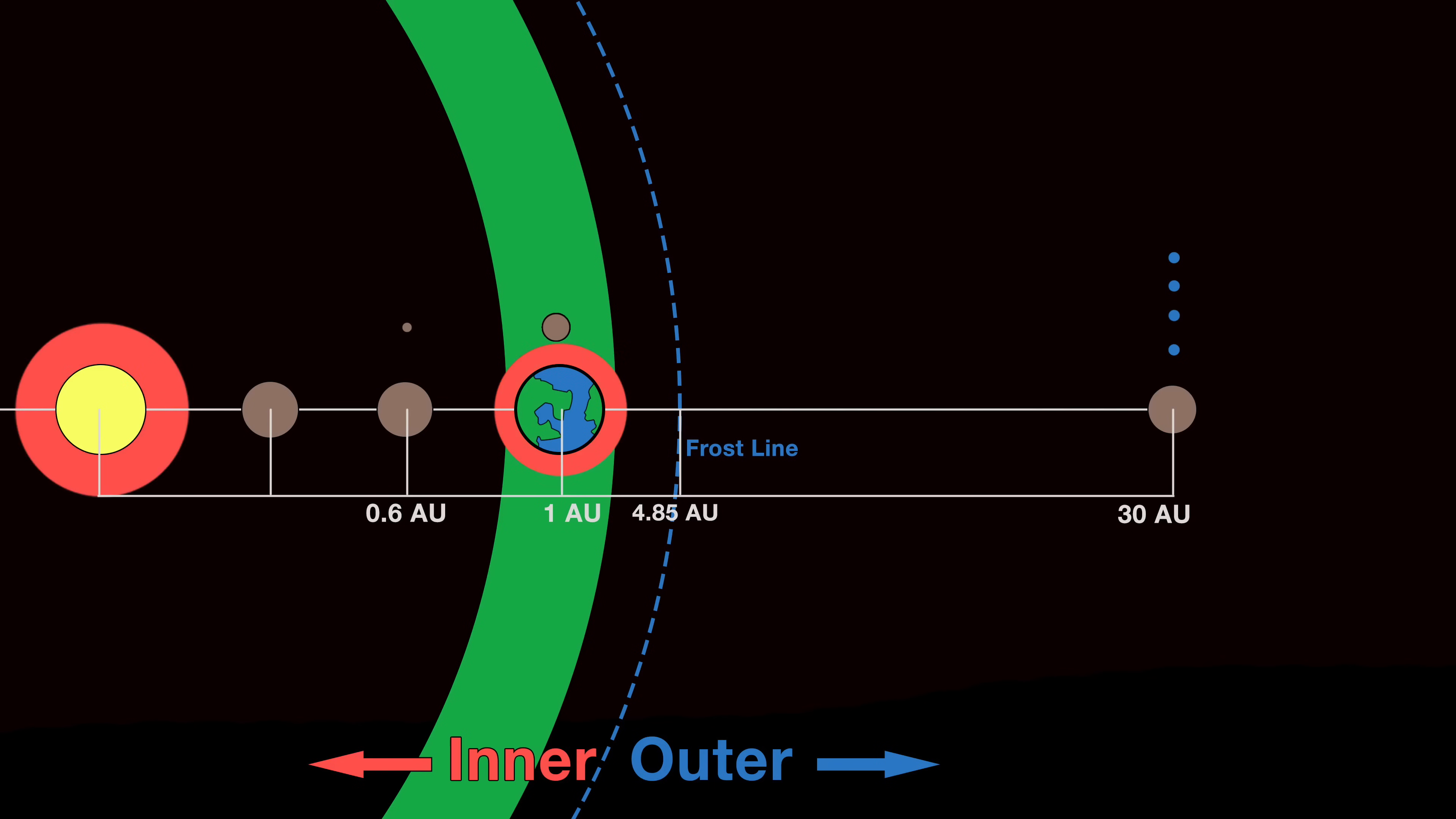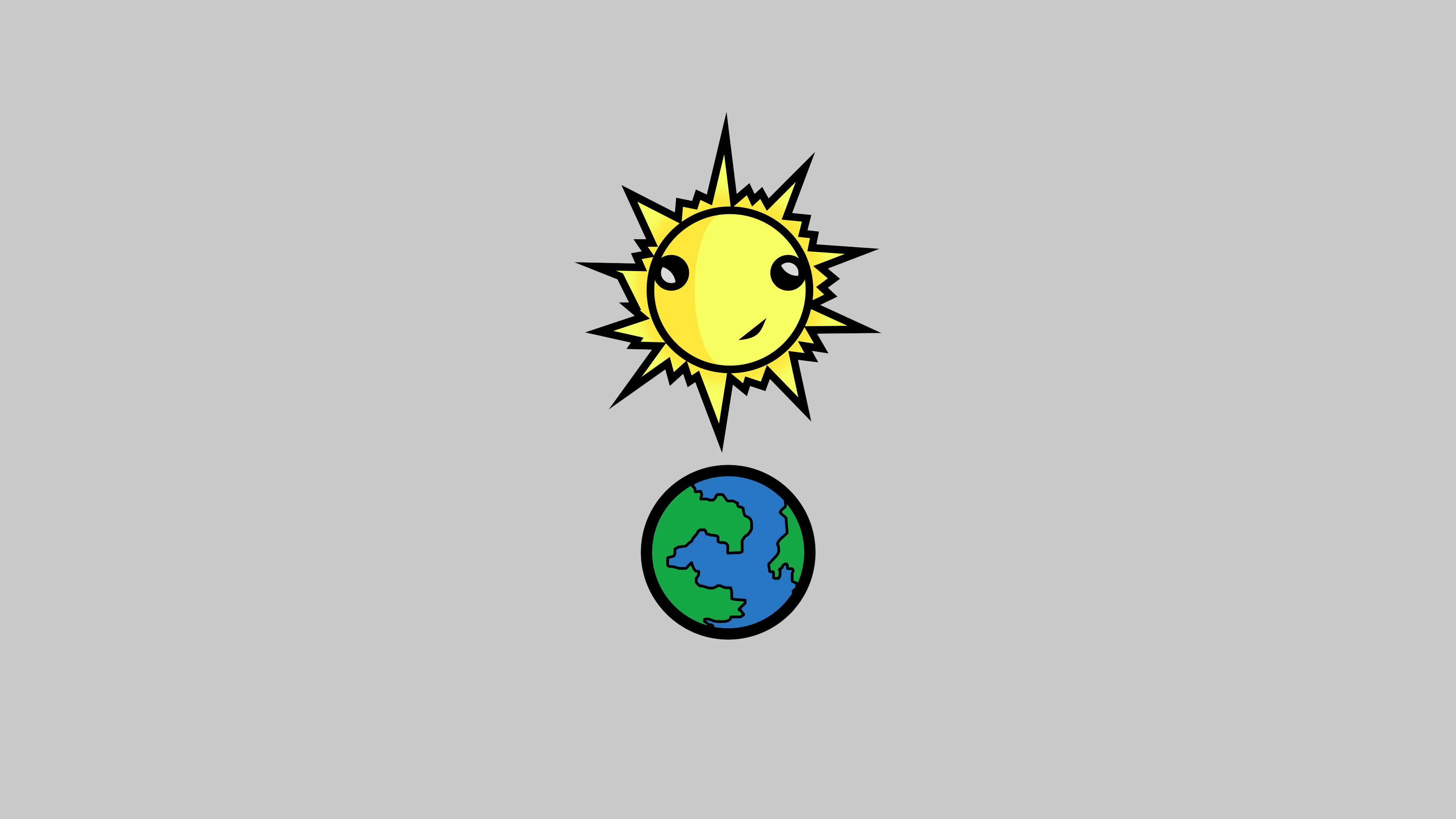To do this we're going to need to know the physical characteristics of our star and our planet. I've covered the construction of stars and planets in previous videos so click the links on screen or in the doobly-doo if you need a bit of a refresher. TLDR, my star here is identical to our sun and the planet is a slightly larger version of Earth.